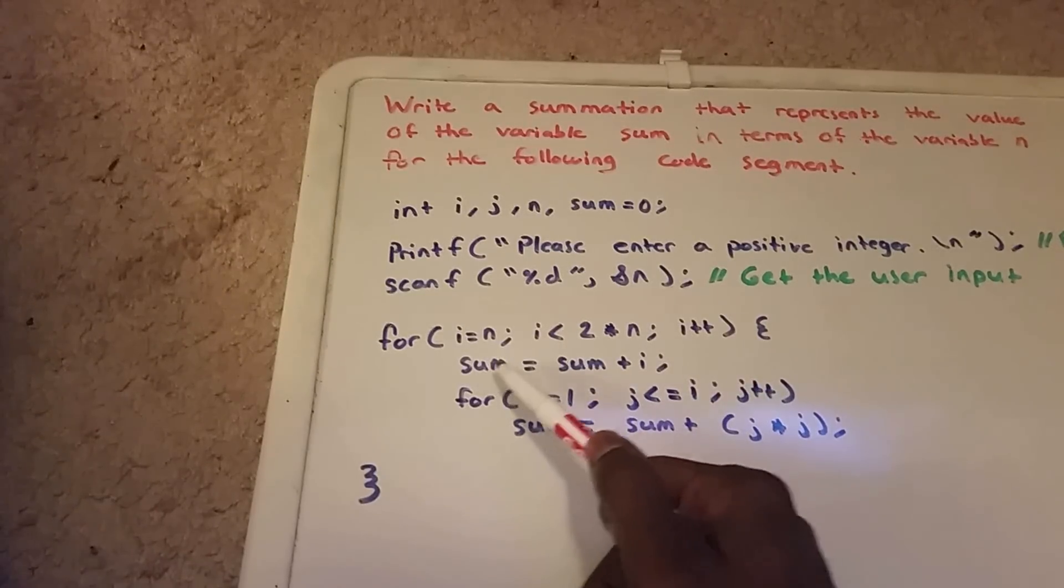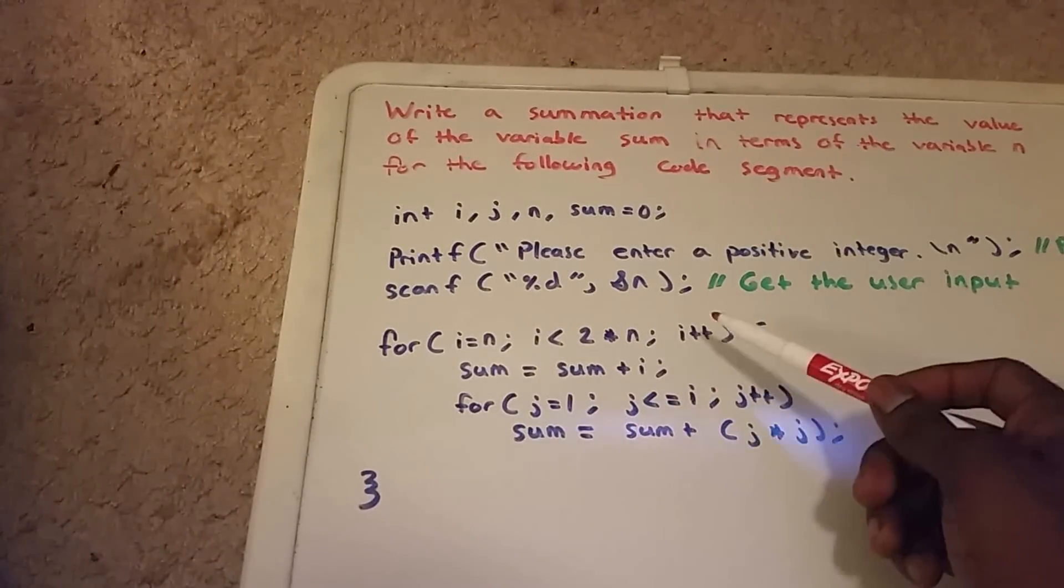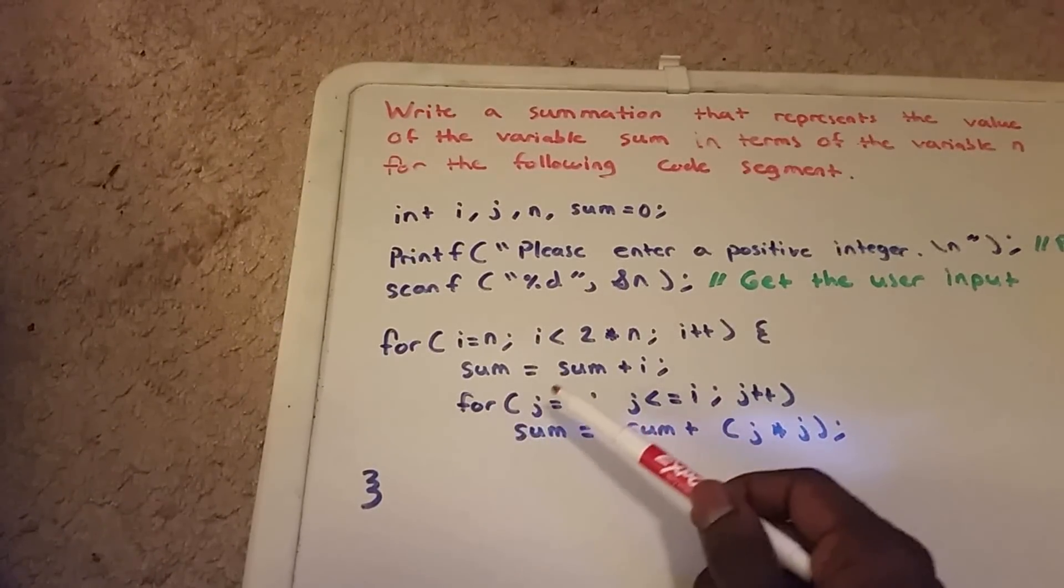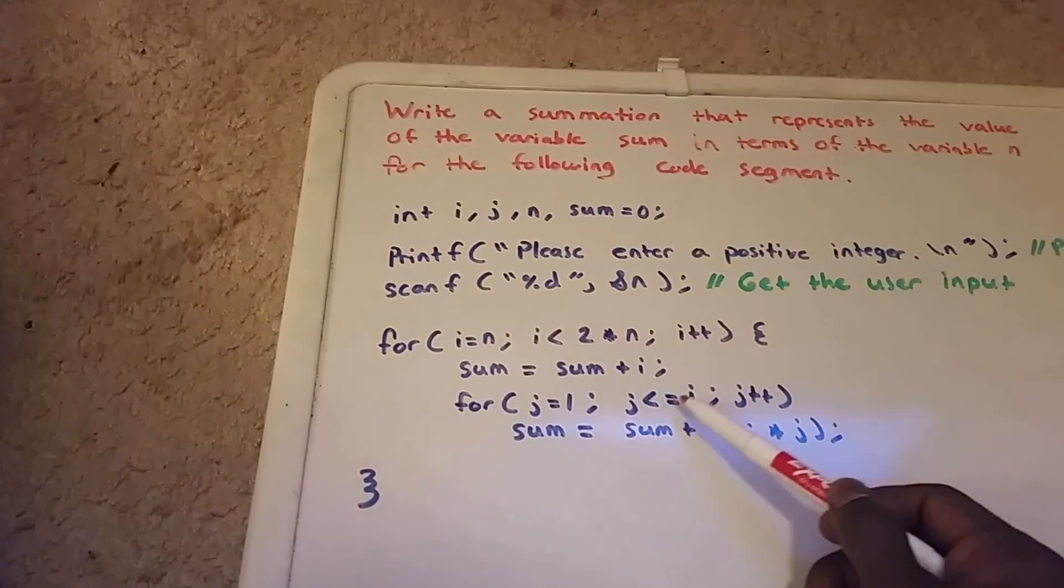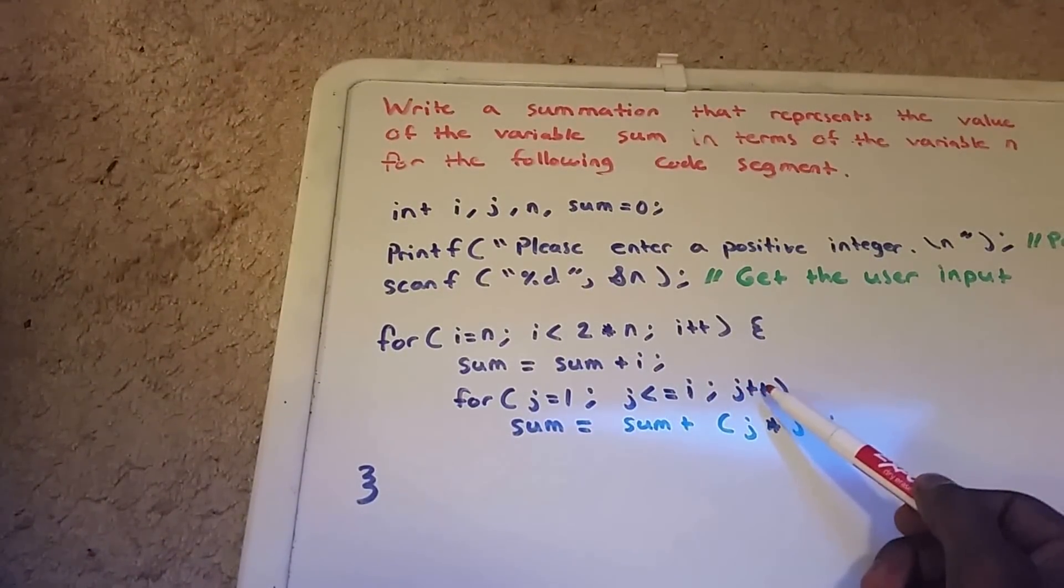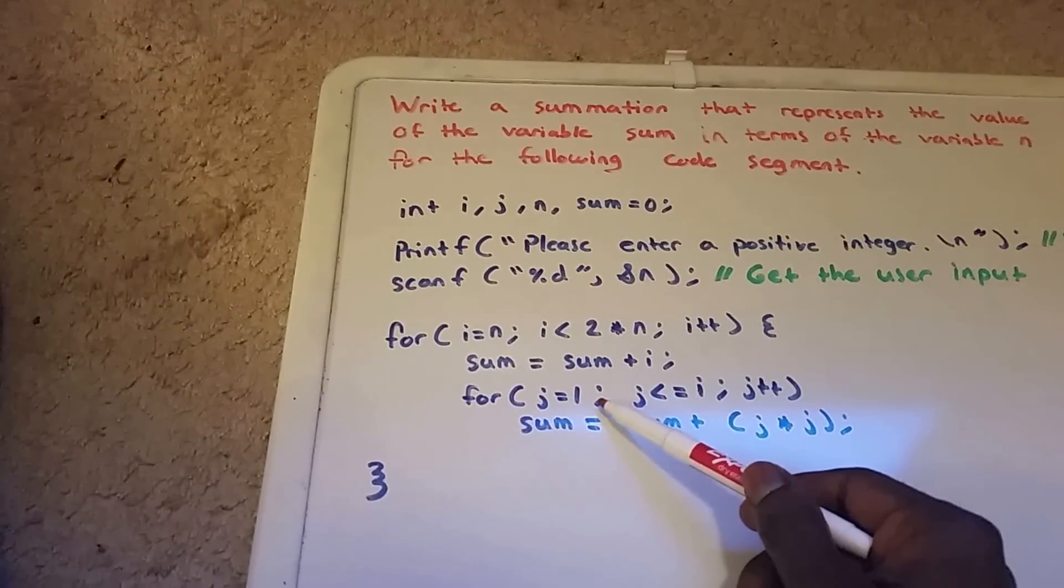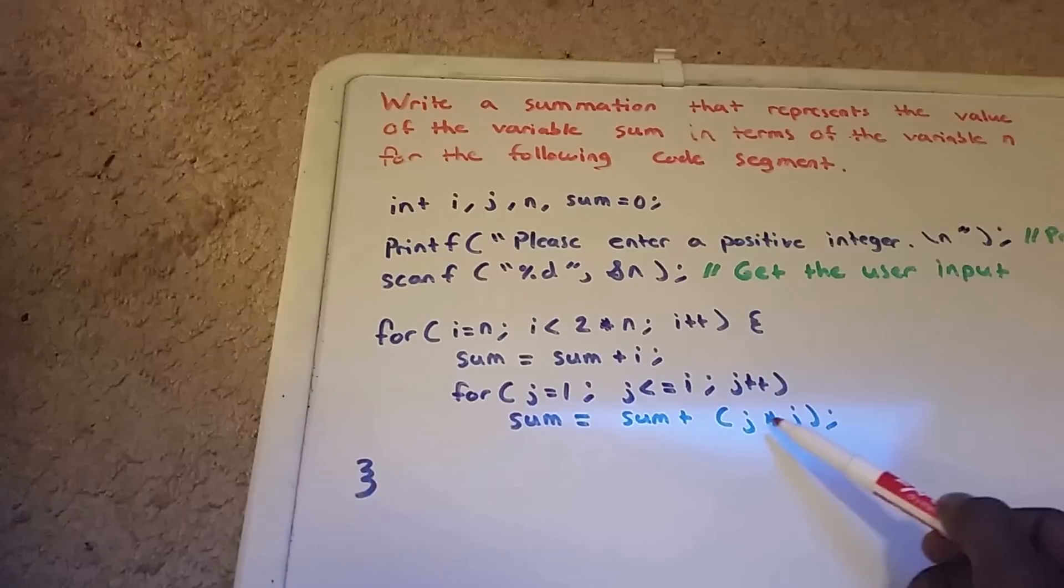Our sum equals sum plus i. Then within this for loop we have another for loop that goes from j equaling one to j less than or equal to i, and j increases by one each iteration. Within this for loop, our sum equals sum plus j times j.